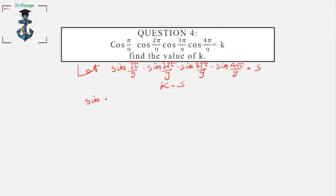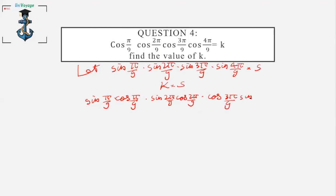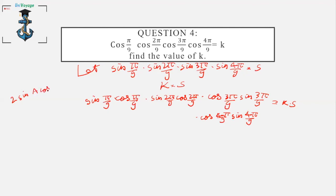Multiplying k·s gives us pairs: sin(π/9)·cos(π/9), sin(2π/9)·cos(2π/9), sin(3π/9)·cos(3π/9), sin(4π/9)·cos(4π/9). We use the formula 2sinA·cosA = sin(2A) and replace all these values.